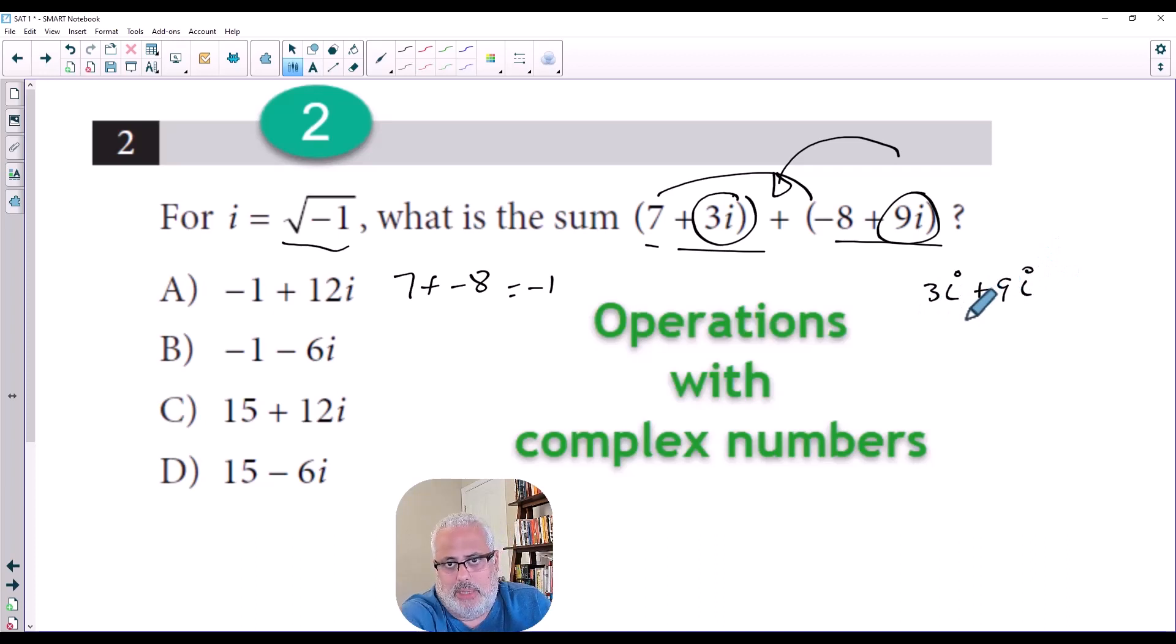So 3i plus 9i is equal like 3x plus 9x, so 3 pencils plus 9 pencils, this is equal to 12 pencils. The pencil here is the letter i.